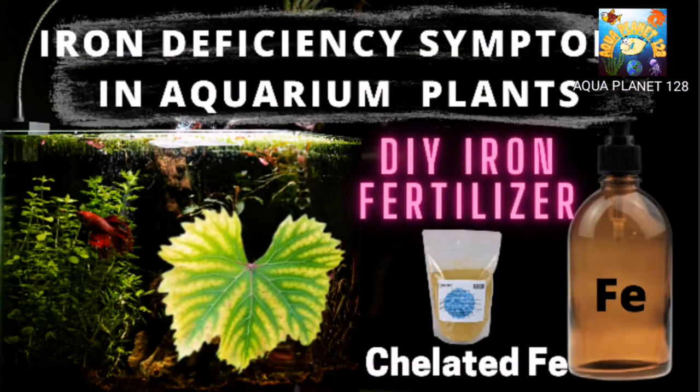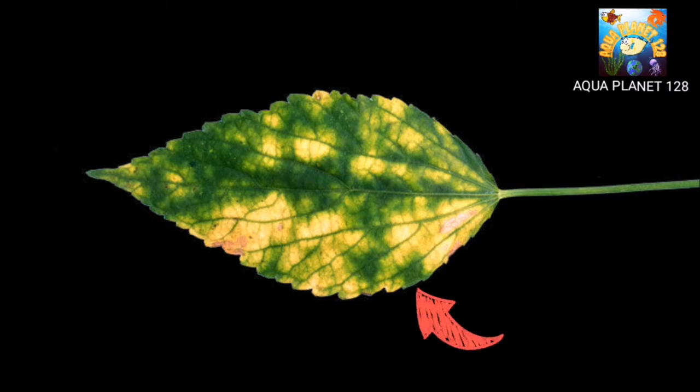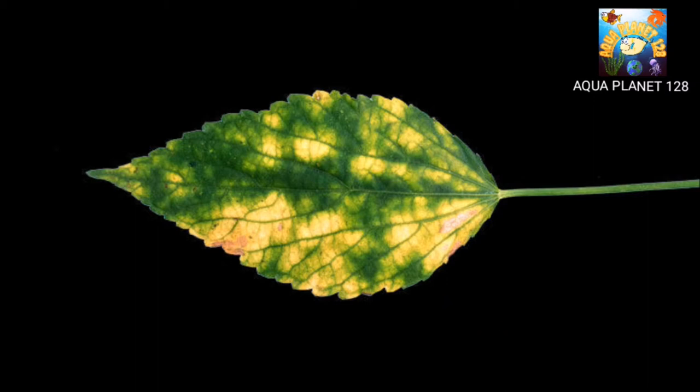Chlorosis is caused by deficiency of iron, zinc, or manganese in aquarium plants. Leaves start turning yellow from the outer edges towards the central part of the leaves in case of iron deficiency. In case of zinc or manganese deficiency, leaves turn yellow from the central part first, then it spreads towards the outer edges.